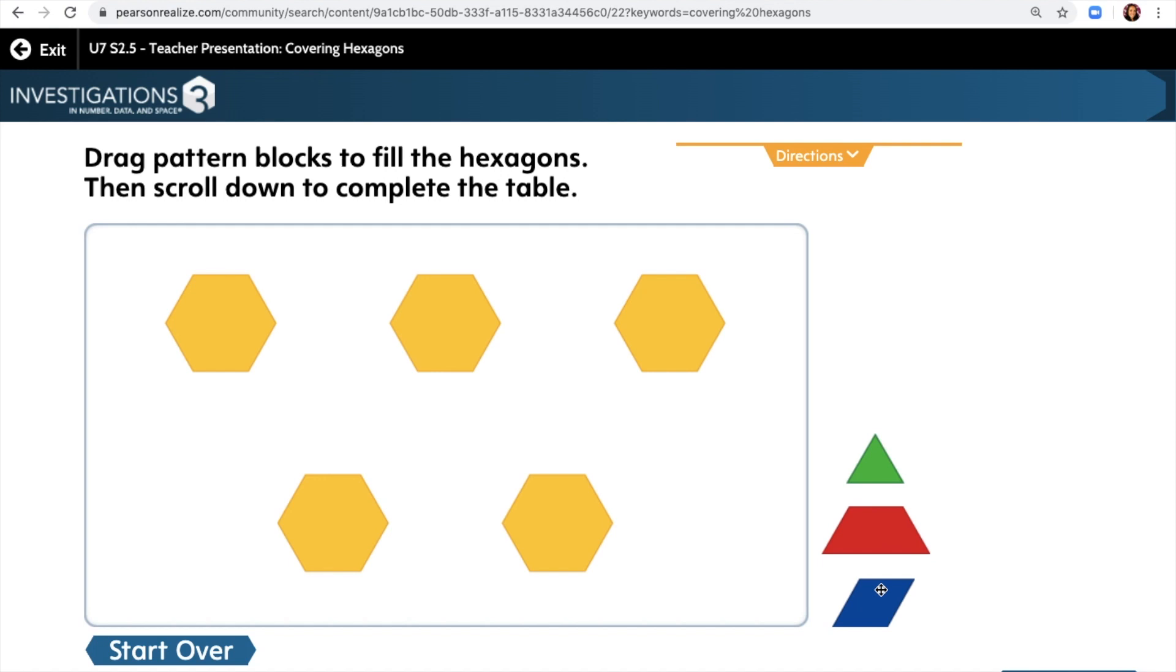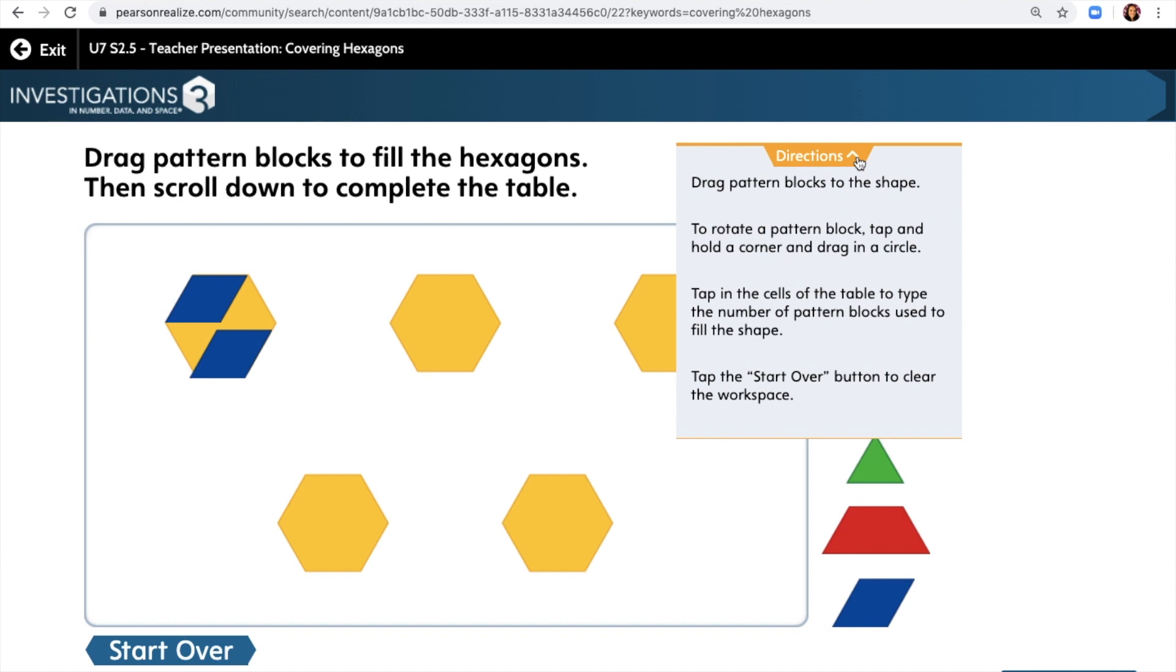We're going to start with rhombuses. I'm going to drag my rhombus up to my hexagon. Here's one, and I'm going to drag the next one. The directions say to rotate a pattern block, tap and hold a corner, and drag in a circle. So I'm going to drag this one over. That looks close enough.